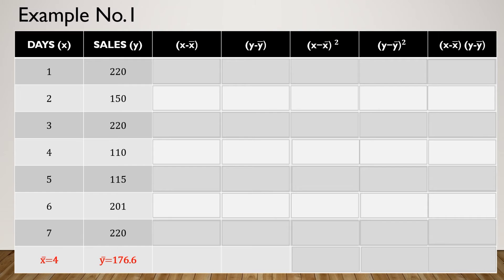On the third column, we compute x minus x-bar for each row. So: 1 minus 4 equals negative 3; 2 minus 4 equals negative 2; 3 minus 4 equals negative 1; 4 minus 4 equals 0; 5 minus 4 equals 1; 6 minus 4 equals 2; 7 minus 4 equals 3. The same procedure applies for y minus y-bar.